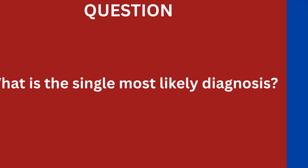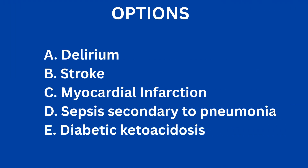Step 3 — evaluate the options. Option A: delirium is a symptom here, not the root cause. Options B and C: stroke and myocardial infarction don't typically present with a fever and productive cough. Option E: DKA is possible in a diabetic patient, but the presentation is a much better fit for infection. The vitals are screaming sepsis and the cough gives us the source. The most likely diagnosis is Option D: sepsis secondary to pneumonia.